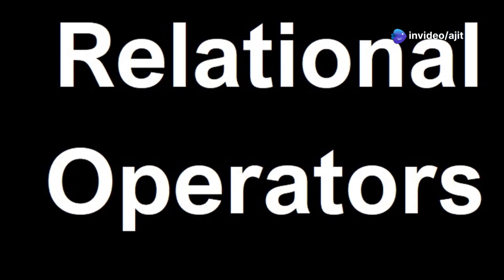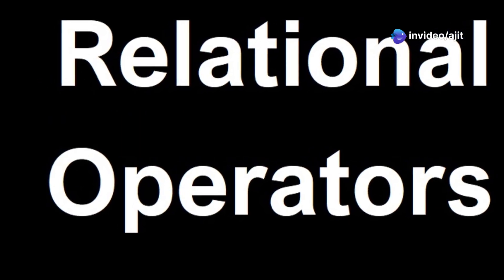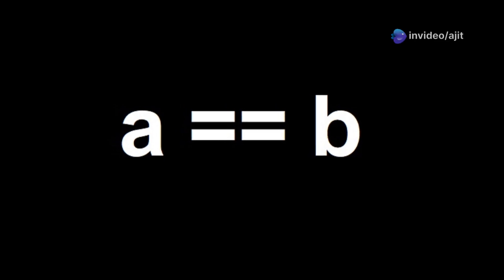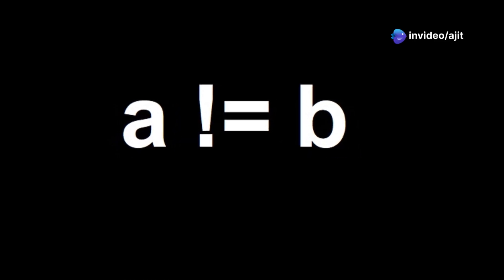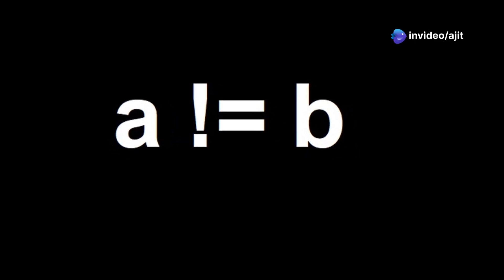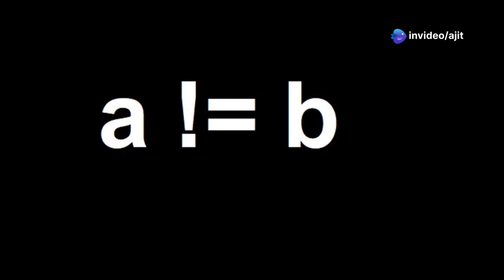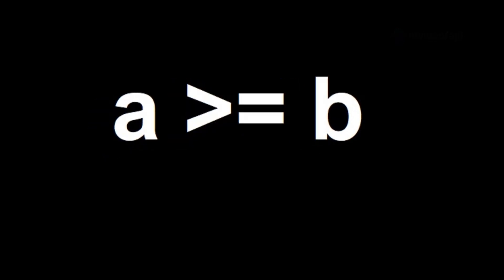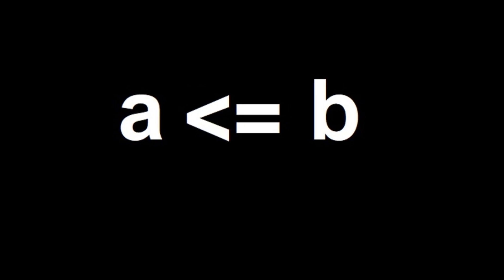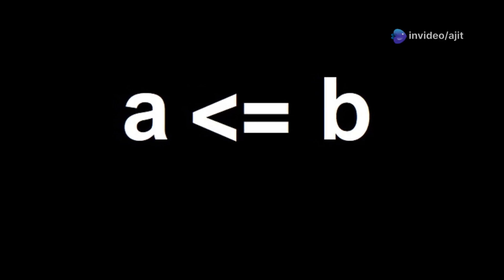Next let's move over to the relational operators. Greater than sign checks if the left operand is greater than the right. Less than sign checks if the left operand is less than the right. Double equal sign checks if both operands are equal. Exclamation equal checks if they are not equal. Greater than equal sign checks if a number is greater than or equal to another. Less than equal sign checks if a number is less than or equal to another.